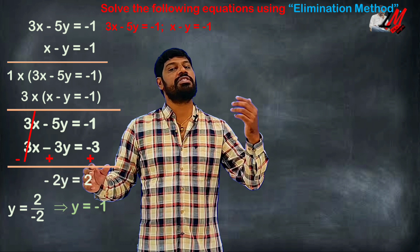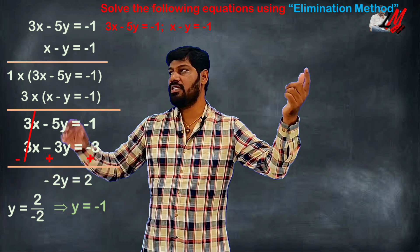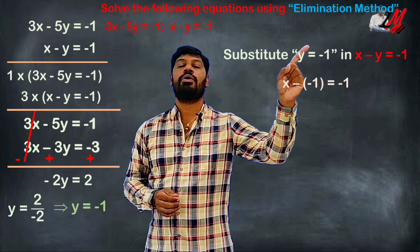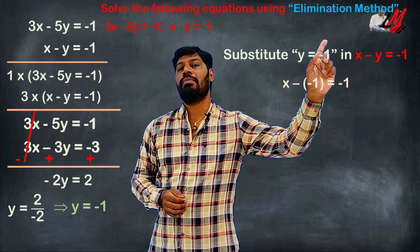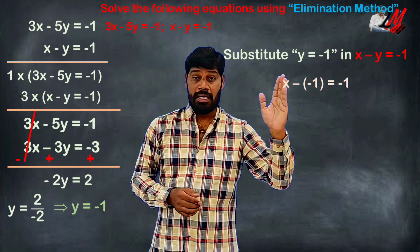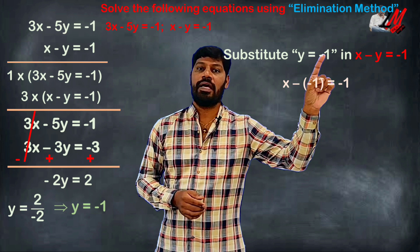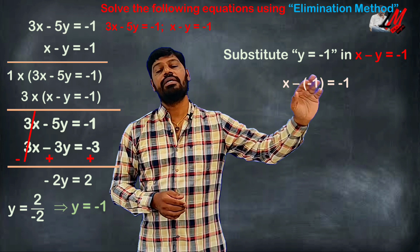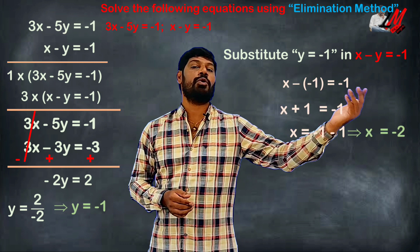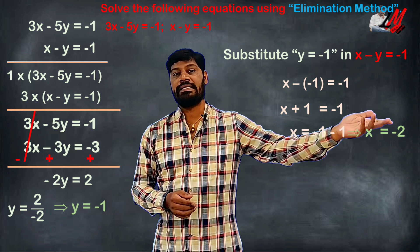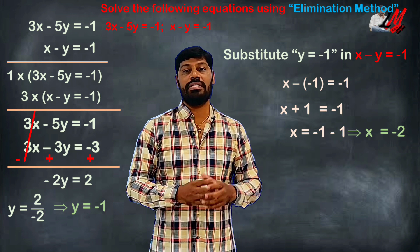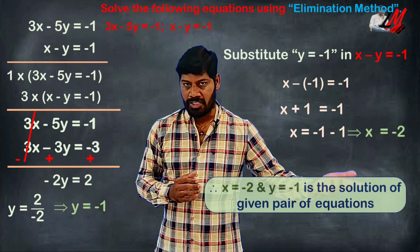Now we substitute y equals minus 1 back into the second equation: x minus y equals minus 1. Substituting: x minus (minus 1) equals minus 1, which gives x plus 1 equals minus 1. So x equals minus 1 minus 1, which is minus 2. Therefore x equals minus 2 and y equals minus 1.